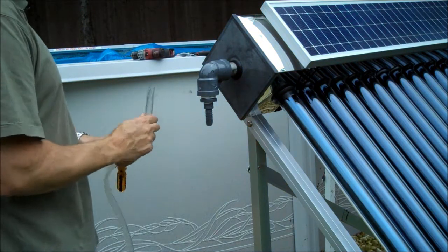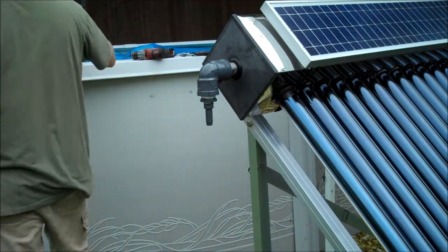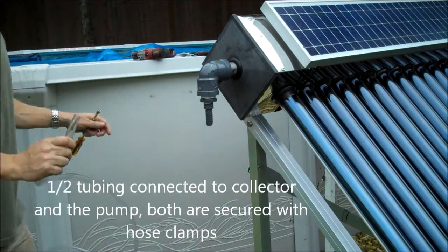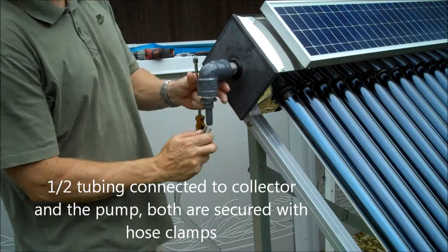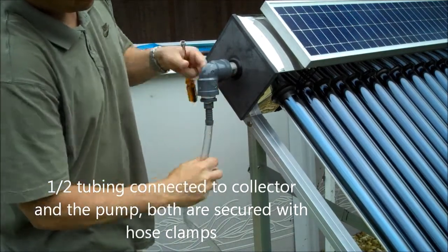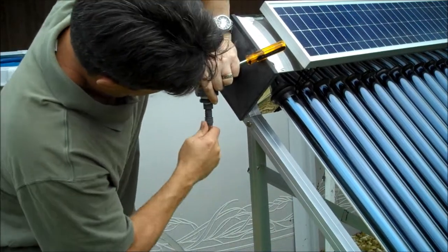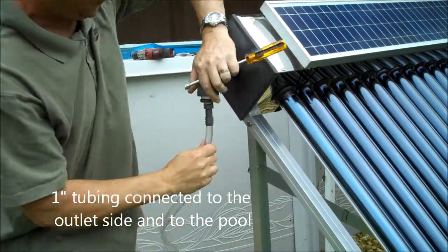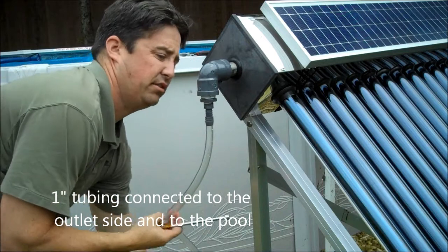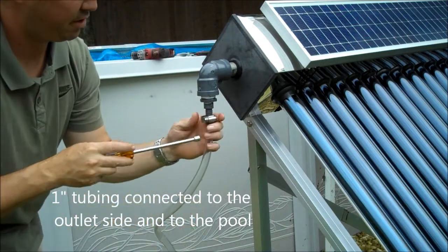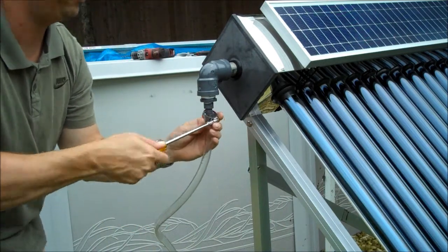Start by connecting the half inch supply line. Give it a little dip in the pool. Put the hose clamp on first. This also works good if you can heat it up slightly. Get it at least half way up. Install the hose clamp.